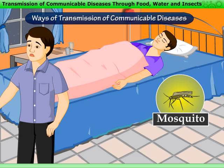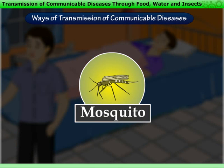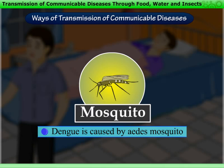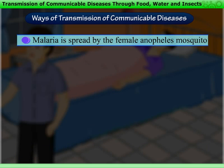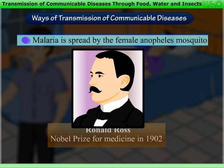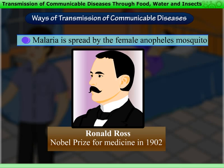That means, when a mosquito bites a sick person, it sucks blood along with the germs of the disease. And when the same mosquito bites a healthy person, it transmits the germs of the disease into the blood of that person. However, all mosquitoes do not spread these diseases. Dengue is caused by the Aedes mosquito, whereas malaria is spread only by the female Anopheles mosquito. This discovery about malaria was made by the scientist Ronald Ross, who got the Nobel Prize for medicine in 1902.